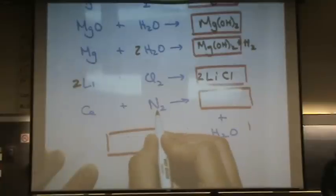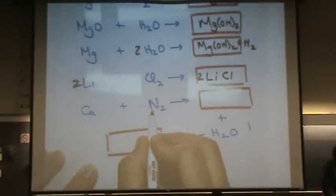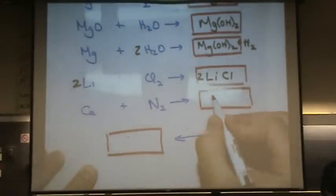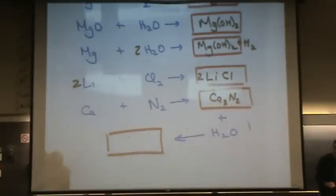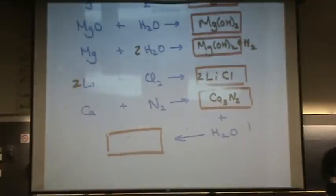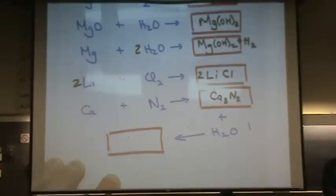Next, calcium and nitrogen. So calcium is Ca²⁺, and we'll add to an N³⁻. The product is Ca3N2. N is 3⁻, so Ca3, and Ca is 2+, so I'll add a two there. And it's balanced already.